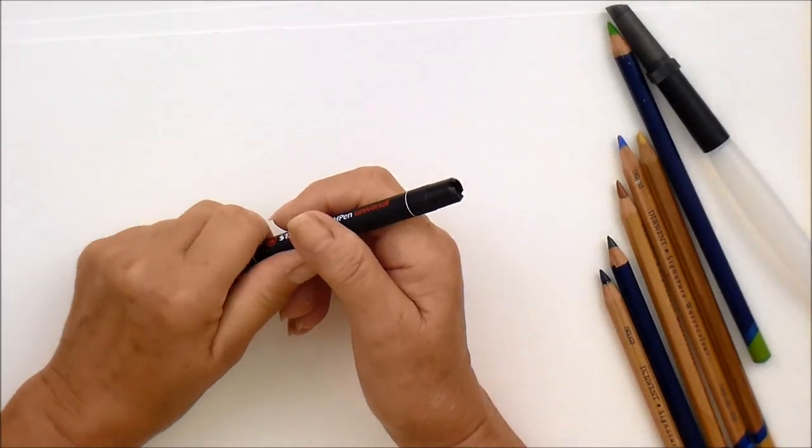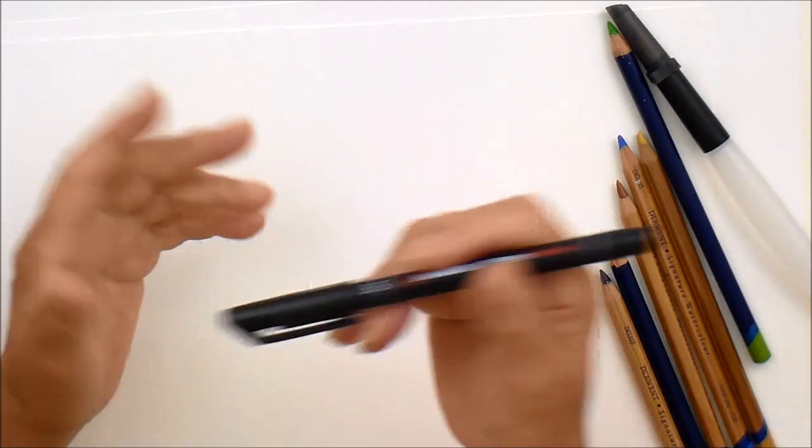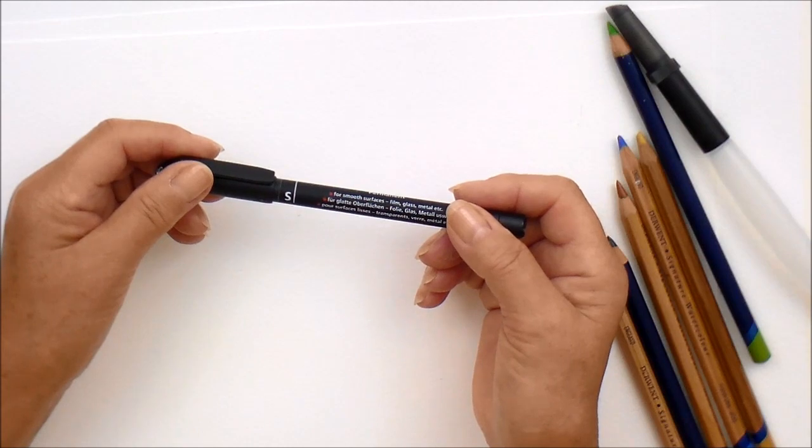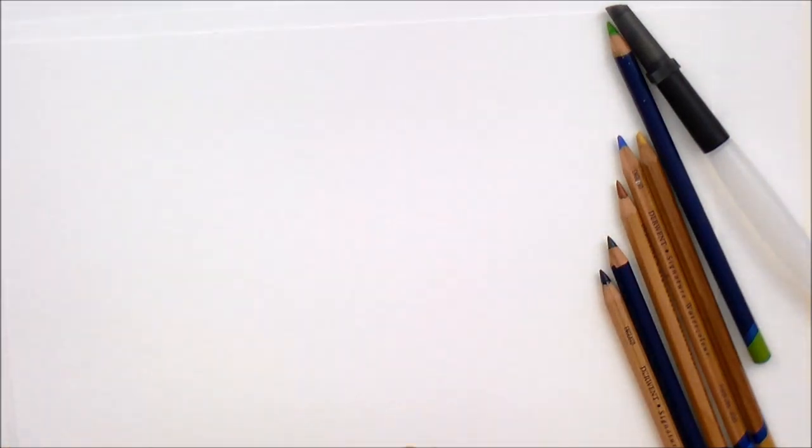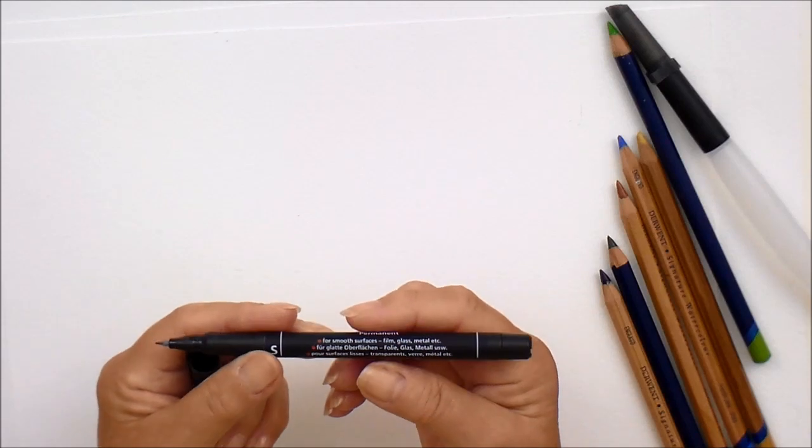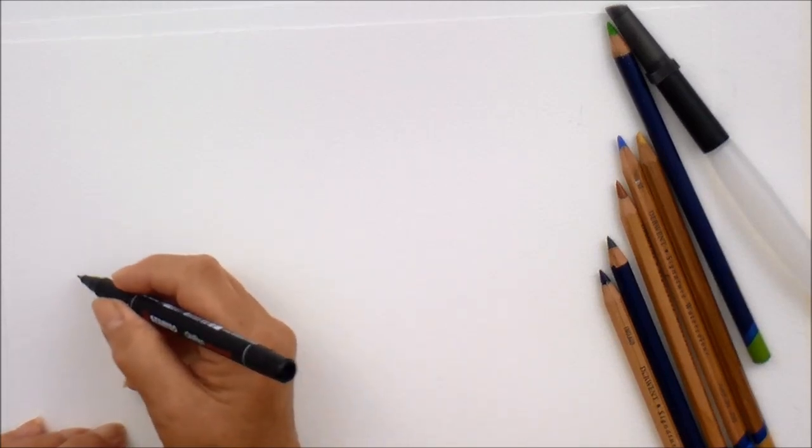So supposing you're going to the seaside, you're going to the beach, you're going to have sea, sand and other things, you probably know the sort of colors you are going to be needing. So, maybe you've got your pen, your permanent pen, so your water won't wash it off, and you're going to do a little bit of sketching.